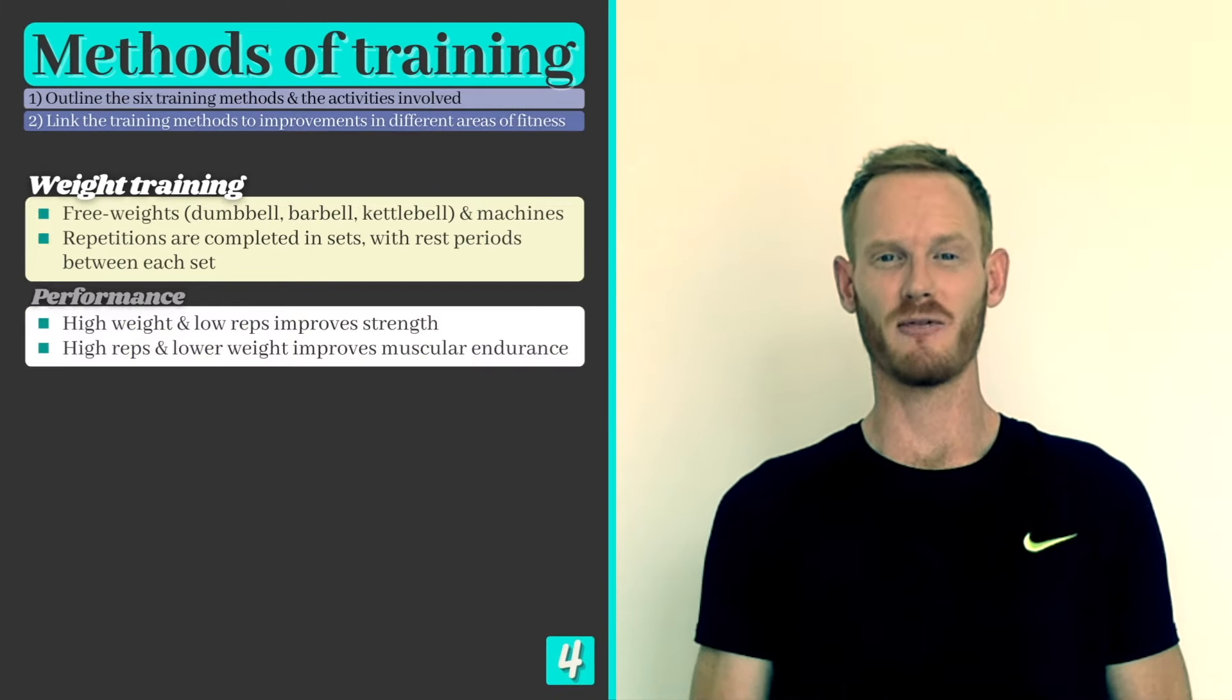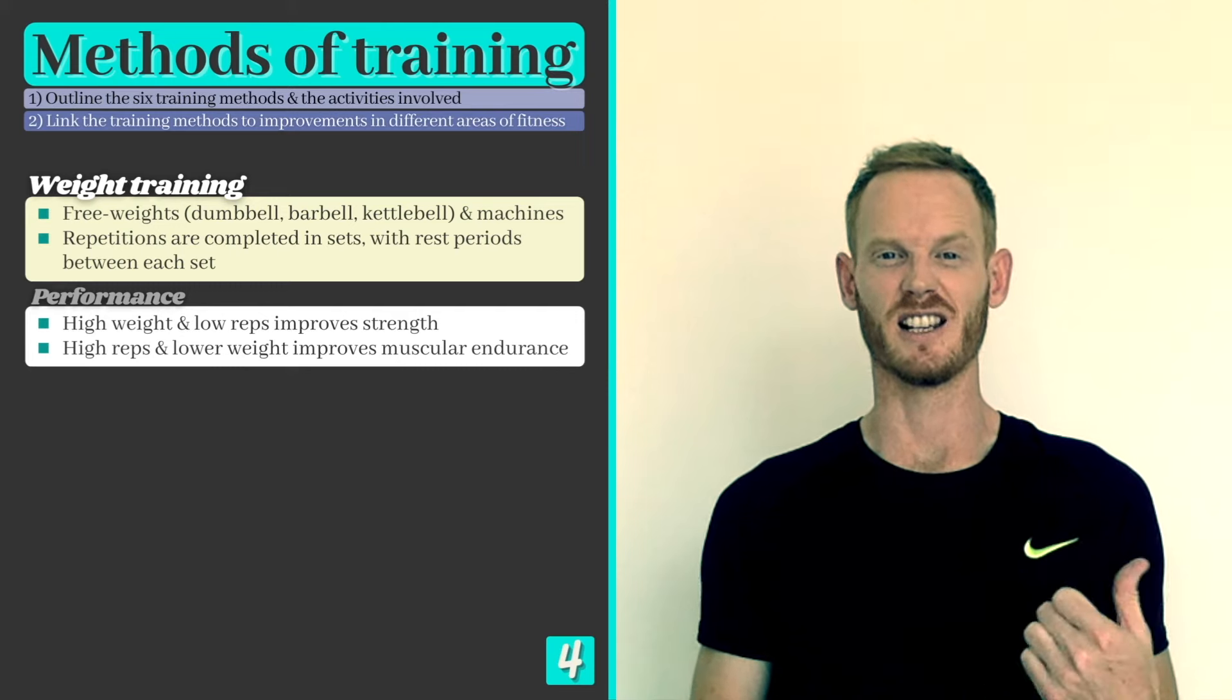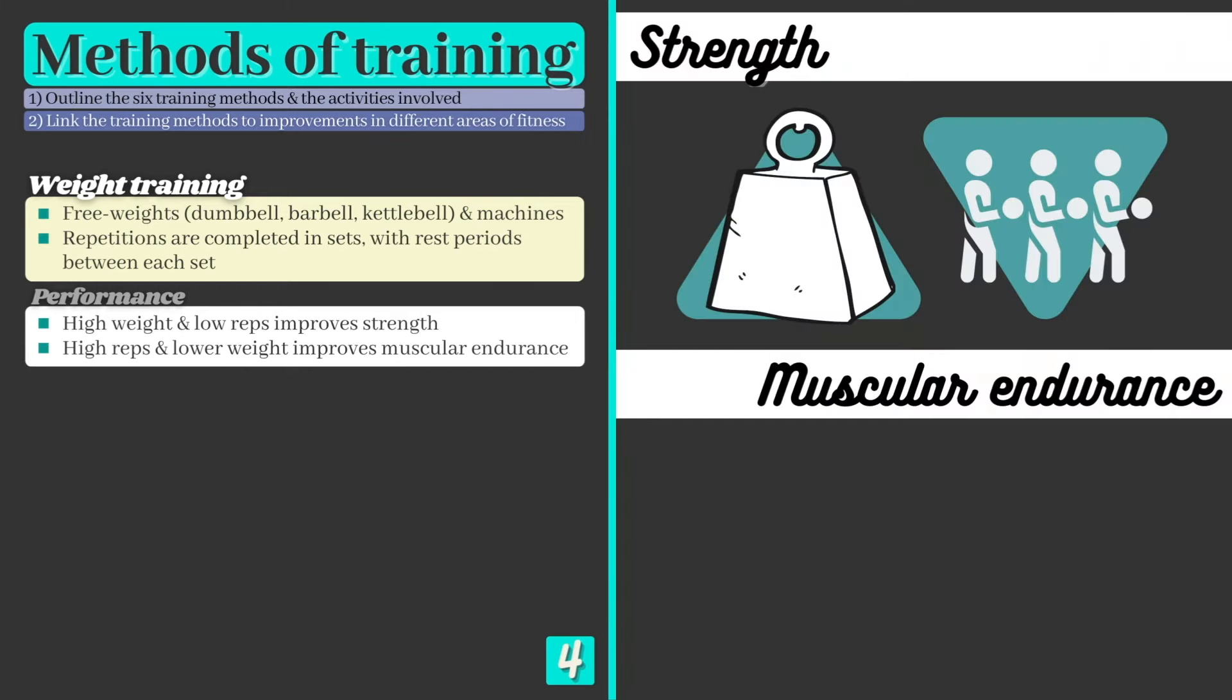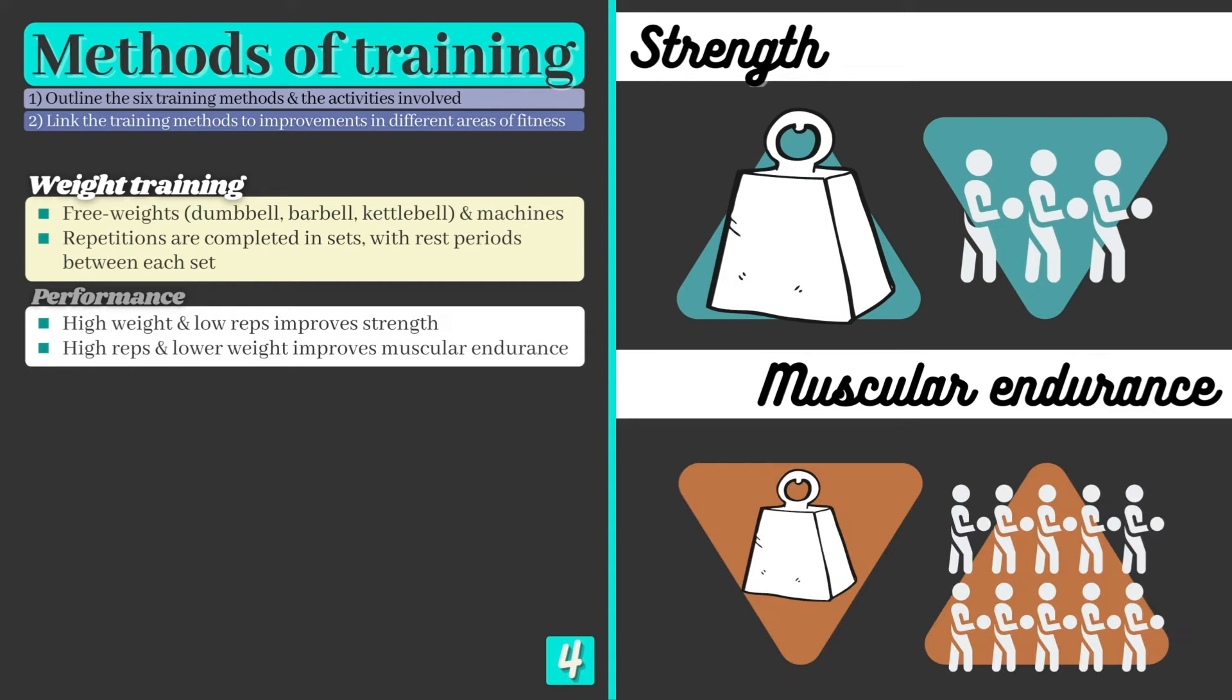Weight training can be used to target several components of fitness including strength, muscular endurance, and power. Those who wish to target strength should lift more weight but complete fewer repetitions per set, while those focused on muscular endurance should increase the number of reps per set and reduce the weight lifted to accommodate for this.